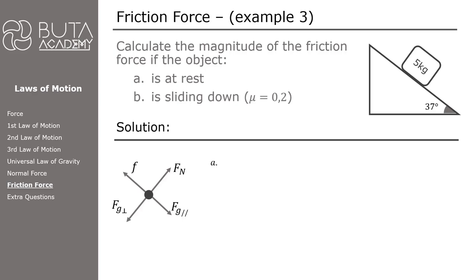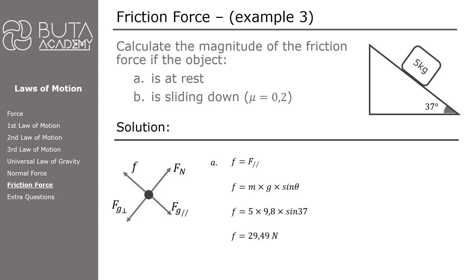In case one, the object is at rest, so the friction force is static. The magnitude of static friction force is always equal to the magnitude of the applied force. Here, the parallel component of gravitational force is trying to move the object down the incline, so static friction equals that parallel component, calculated as m × g × sin θ. With mass 5 kg, g = 9.8 m/s², and θ = 37°, the friction force is 29.49 newtons.